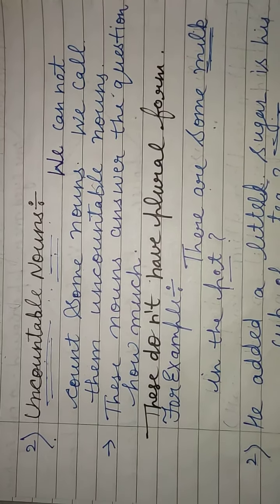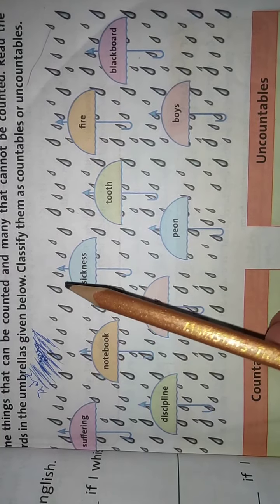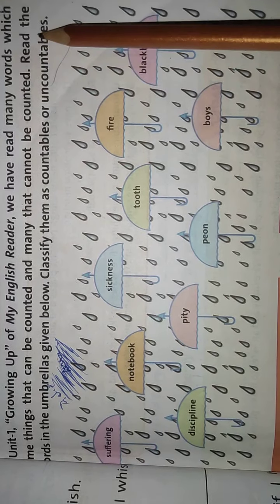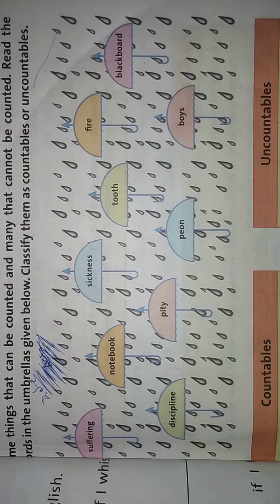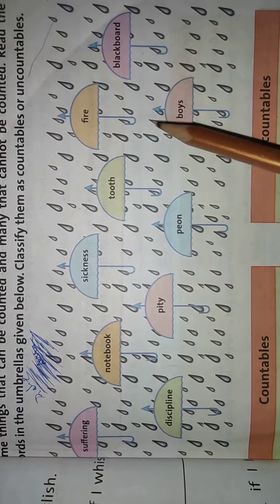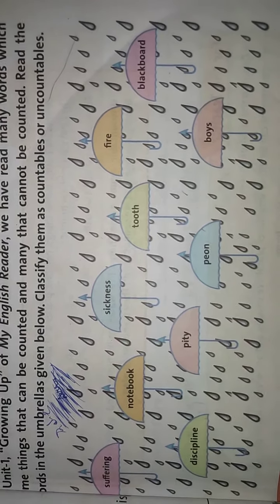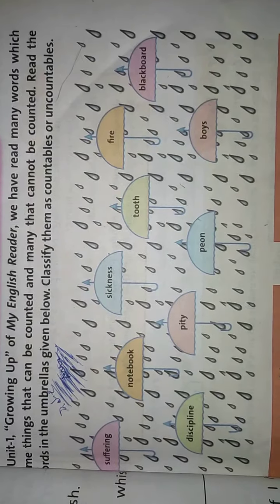Now we come to worksheet number 6, countable and uncountable nouns. In this worksheet we have many words — things that can be counted and many that cannot. Read the words in the umbrellas on page number 7 and classify them as countable or uncountable nouns.